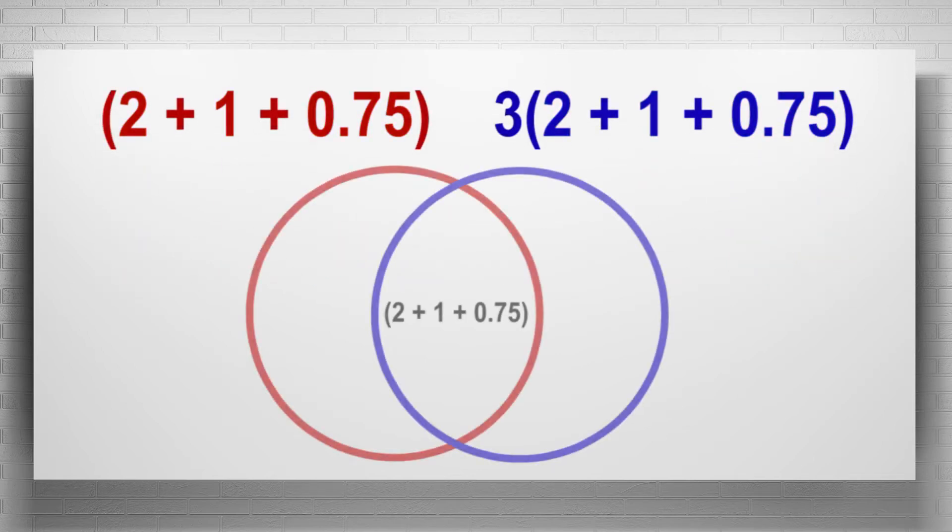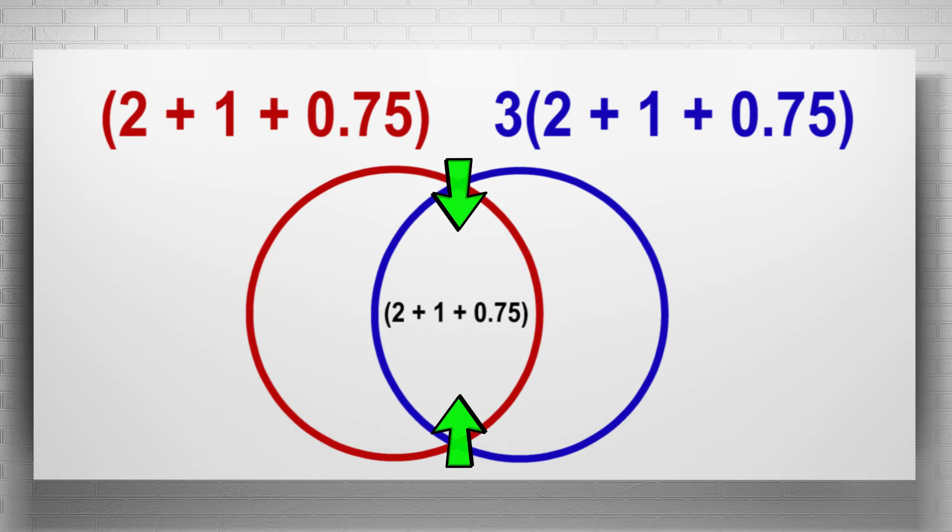We can further visualize the similarities and differences between these two expressions by using a Venn diagram. The middle portion of the diagram represents the elements common to both expressions. In this case, 2 added to 1 added to 75 hundredths.